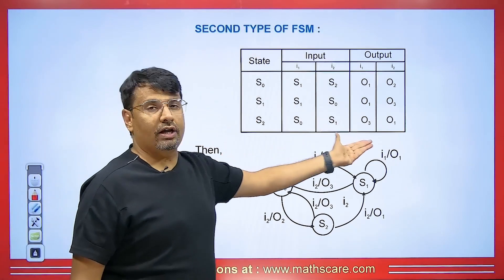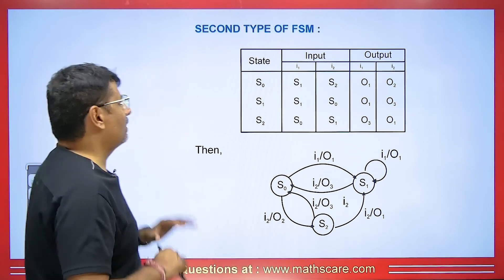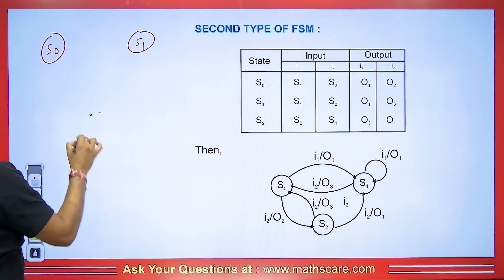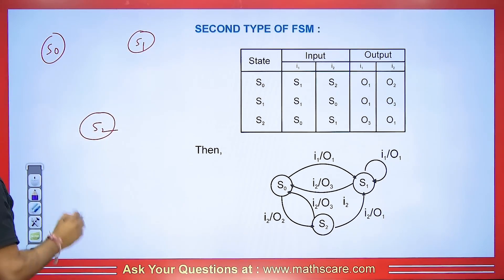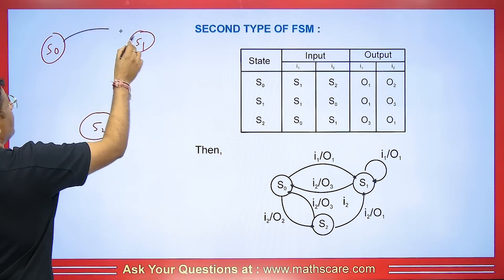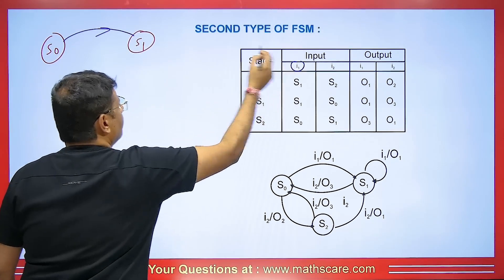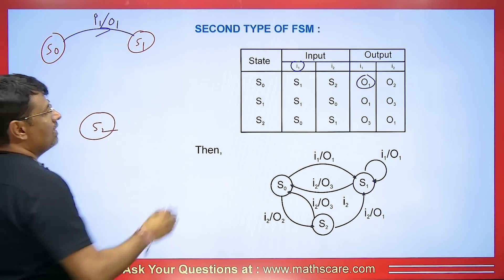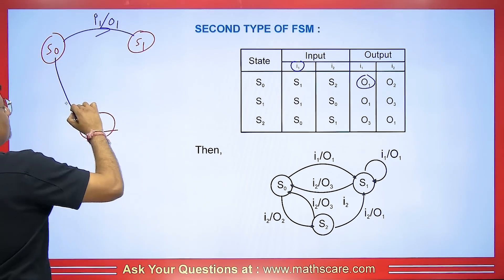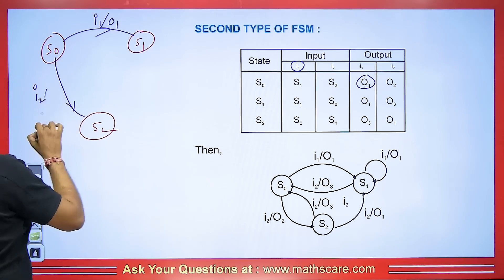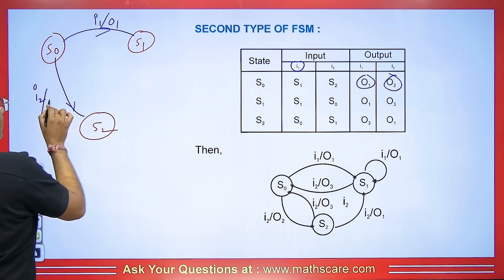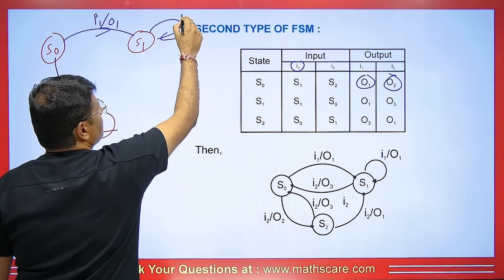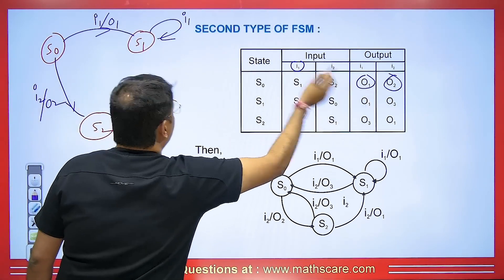Sometimes we are given two inputs corresponding to two outputs. No need to worry — we make the diagram the same way. We have S0, S1, and S2. S0 is going to S1 with input I1 and output O1. S0 is going to S2 with input I2 and output O2. S1 is making a self-loop with input I1 and output O1.